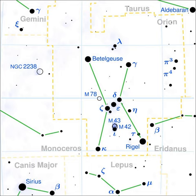Mu Orionis Ab is a G5V dwarf orbiting A at a distance of 0.077 AU, approximately twice the orbital distance of Mercury.